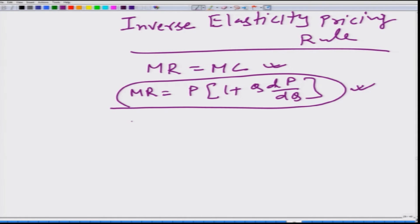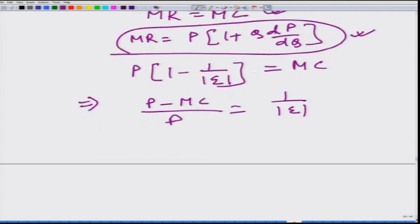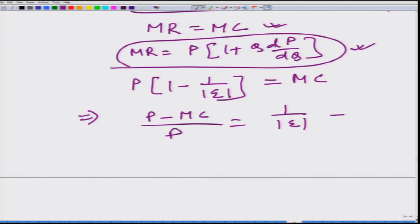We can write it as a function of price elasticity of demand, which comes out to be 1 by epsilon, and this is equal to MC. Further rearranging, we get: P minus MC divided by P equals 1 divided by the absolute value of price elasticity of demand. This equation is called IEPR — the inverse elasticity pricing rule.